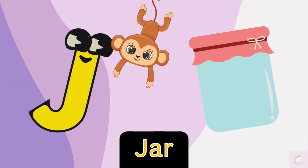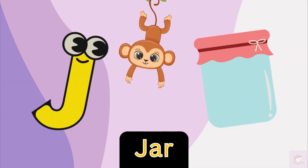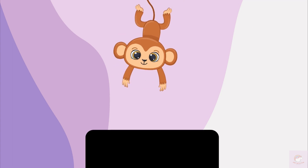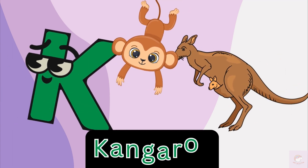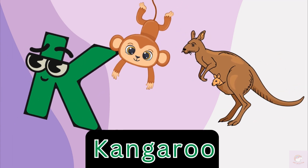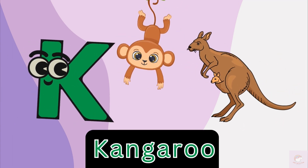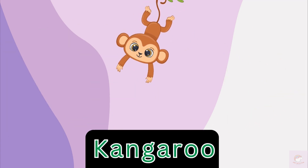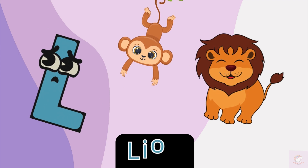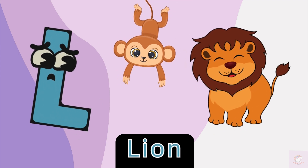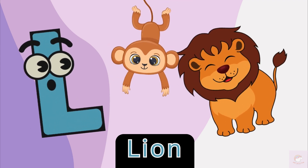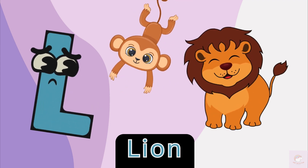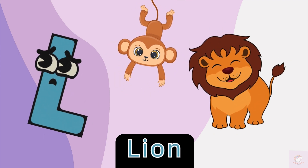J is for jump, J-J-jump. K is for kangaroo, K-K-kangaroo. L is for lion, L-L-lion.